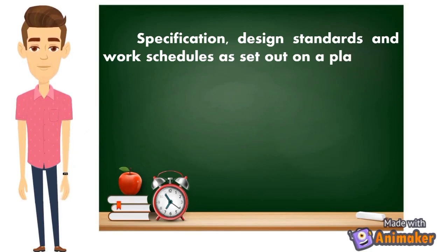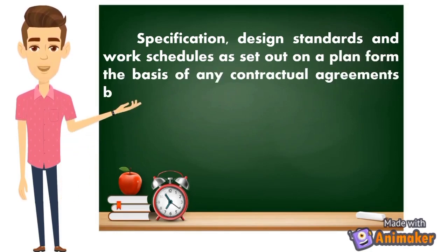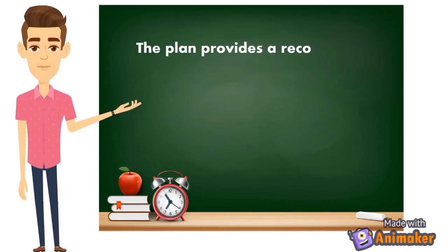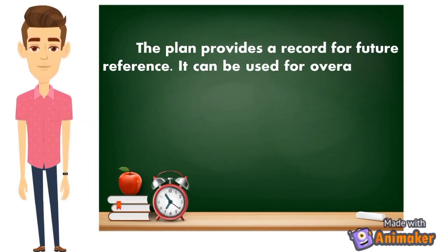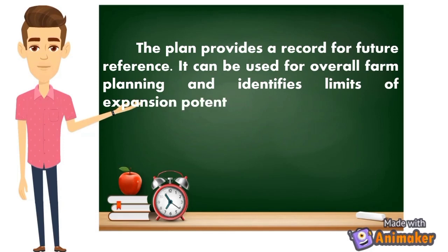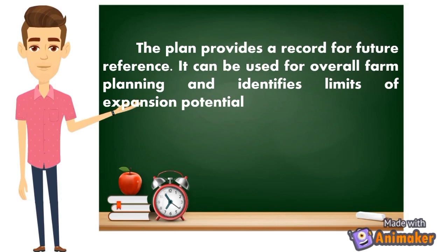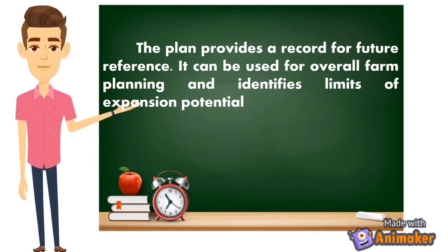Again, specific yung mga ilalagay mong details about your irrigation plan. Next, specification design standards and work schedules as set out on the plan form the basis of any contractual agreements between the installation contractor and the farmer. The plan also provides a record for future reference — it can be used for overall farm planning and identifies limits of expansion potential. If ever gustong baguhin yung irrigation system, magbe-base pa rin tayo dun sa unang plano para i-improve at kumanda pa yung irrigation system.